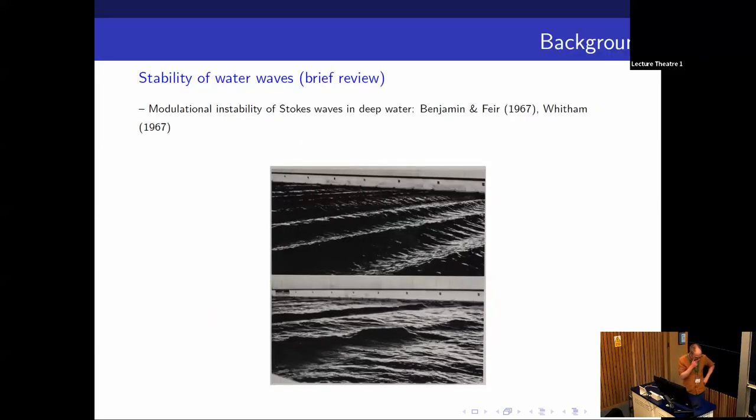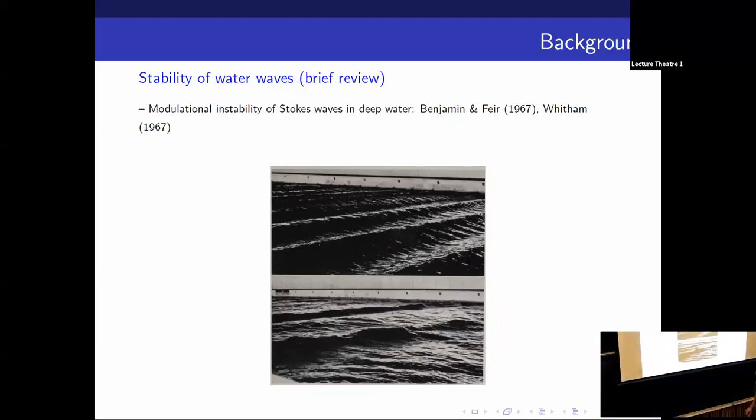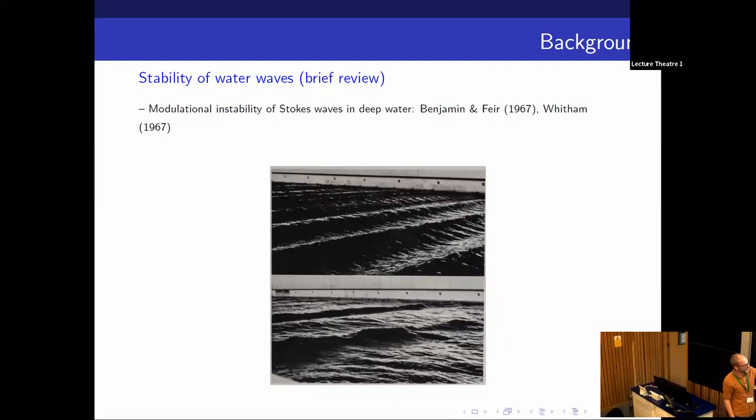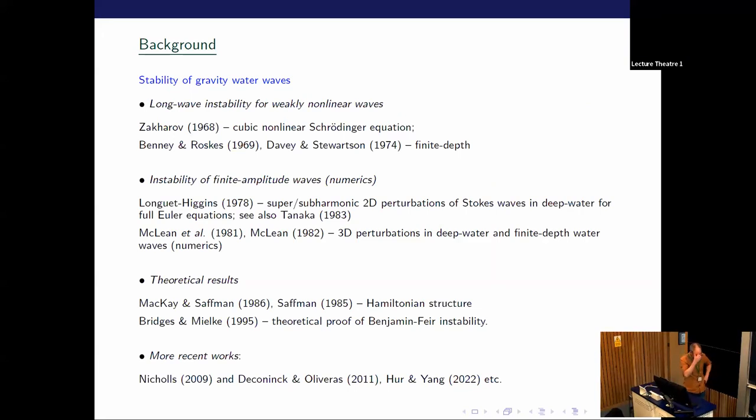Just a little bit on the history of stability, very briefly. There's a very famous picture that many people have seen before of Benjamin and Feir's experiments in a large tank. The upper one is a train of Stokes waves created at the head of the tank. Then further downstream, this modulational instability kicks in, which was analyzed by Benjamin. It all starts to disrupt and become irregular.